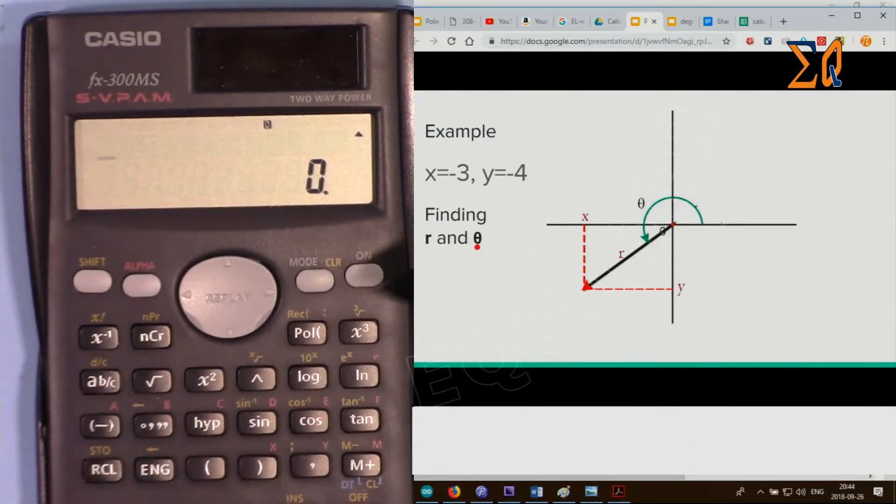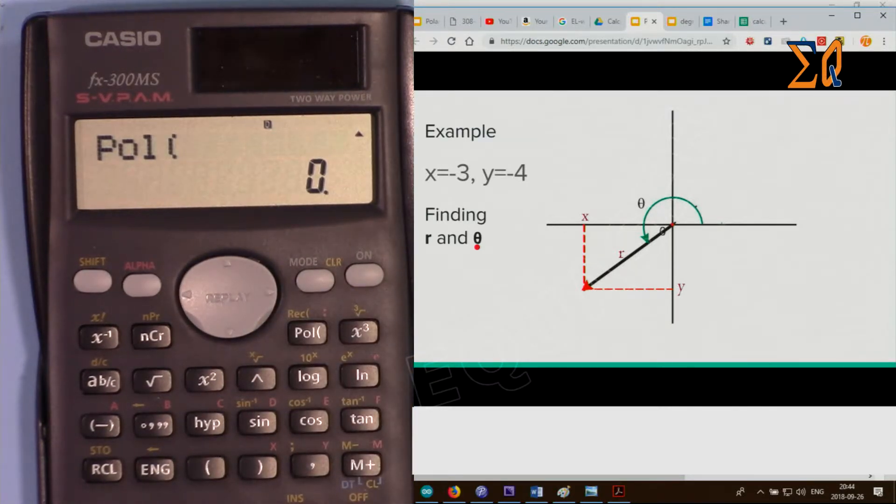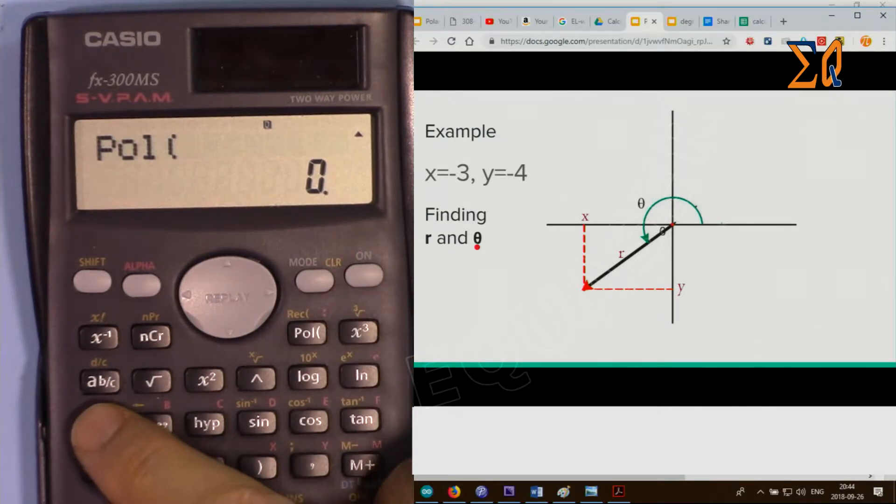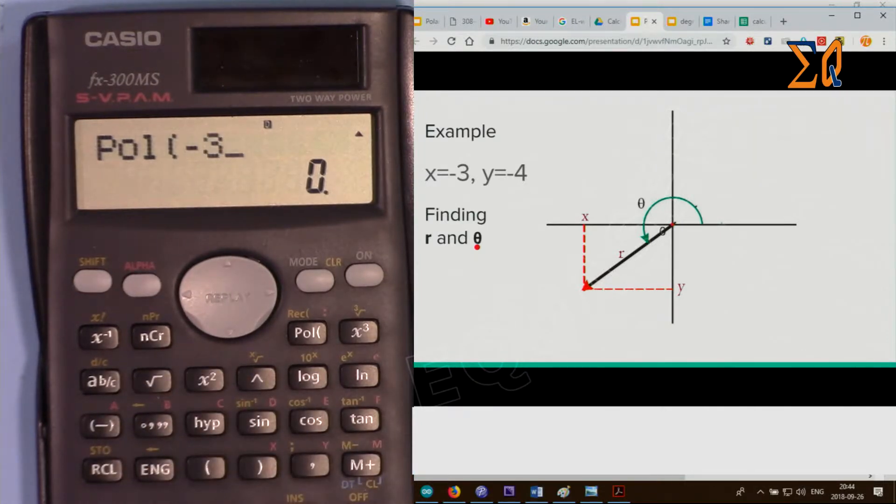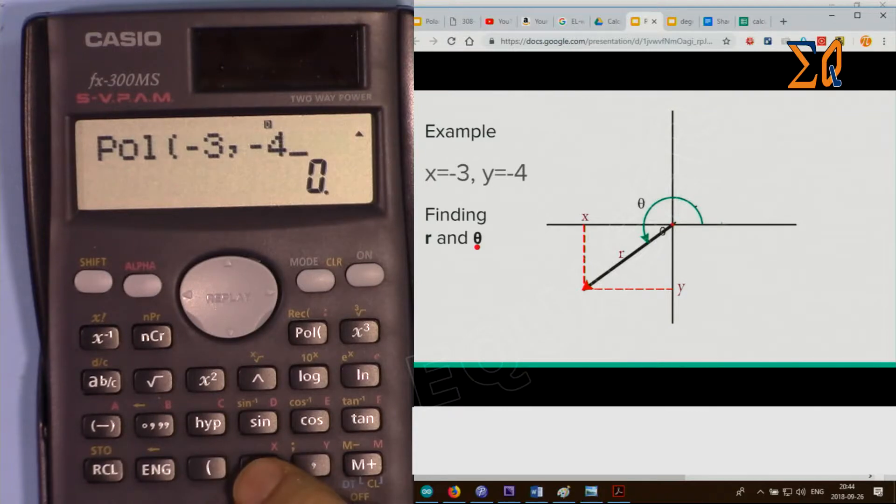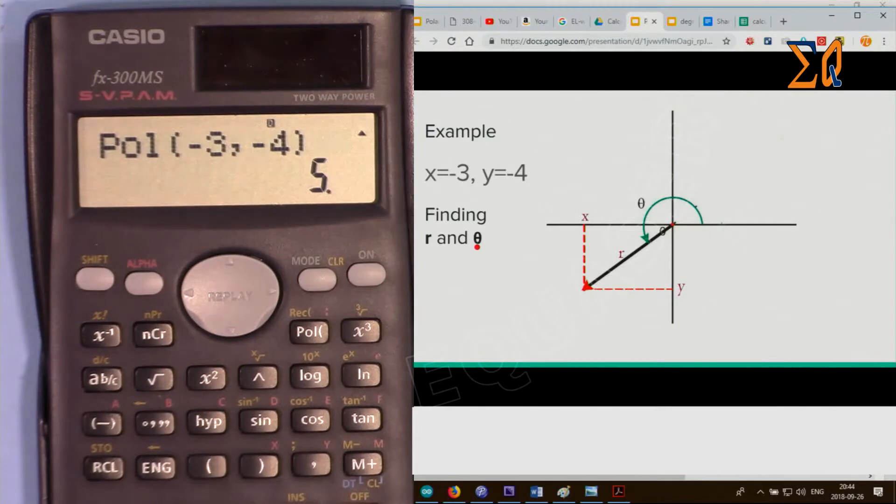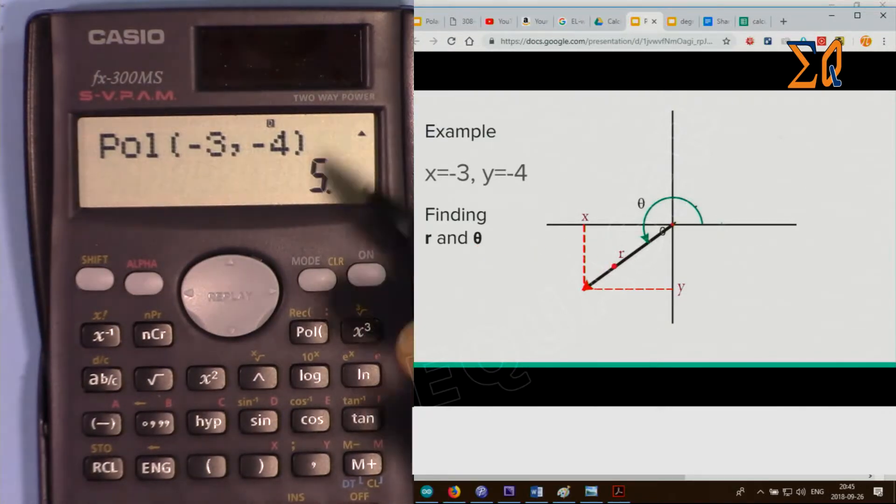Because I want R and theta, I select polar. For the minus I'm entering this minus, so minus 3 comma minus 4, then close. Press equal, so it shows that the magnitude is 5. Now for the angle, press recall and F.